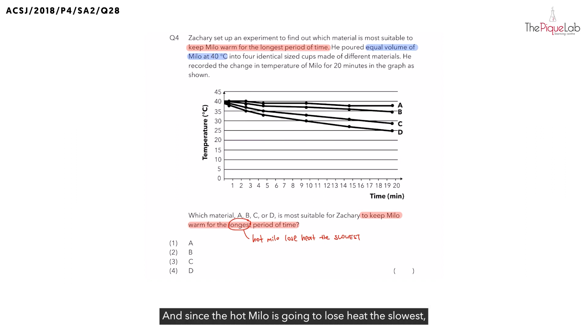And since the hot Milo is going to lose heat the slowest, this means, is the temperature going to decrease the fastest or the slowest? The temperature would decrease the slowest. So, let's add that in and decrease in temperature the slowest as well.